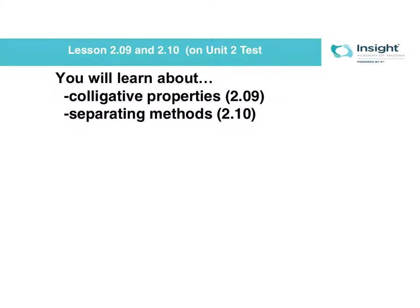The last set of lessons for Unit 2 are about colligative properties and separating methods. Since our solutions — our combination of a solute and a solvent — involve combining pure substances, that causes a change in their generic properties, which are the colligative properties. We'll also be talking about how to separate them back out.